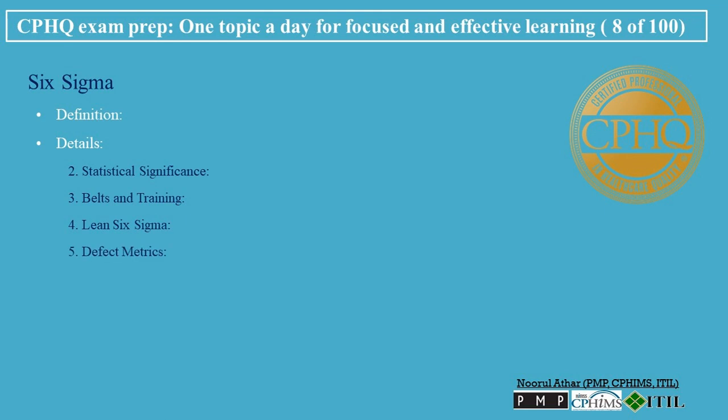The primary metric used in Six Sigma is the defect rate. A Six Sigma process achieves a level of 3.4 defects per million opportunities (DPMO), implying a highly efficient and nearly defect-free process.